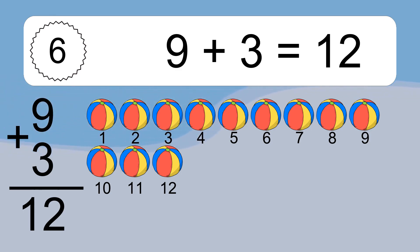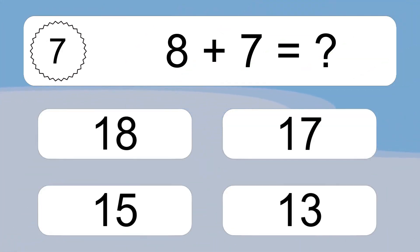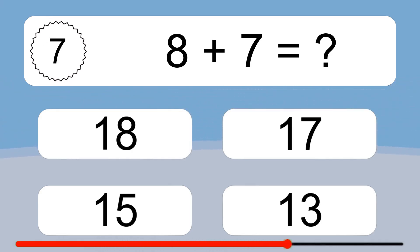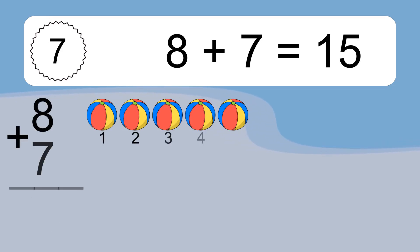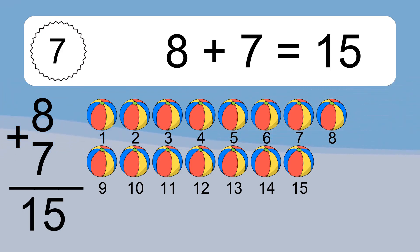7 plus 5 equals 12. Let's count it: 1, 2, 3, 4, 5, 6, 7, 8, 9, 10, 11, 12. Then: 1, 2, 3, 4, 5, 6, 7, 8, 9, 10, 11, 12, 13, 14, 15.